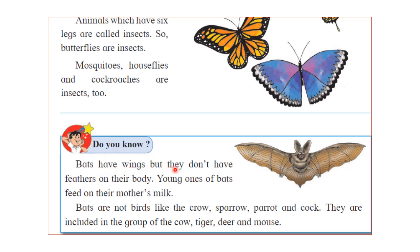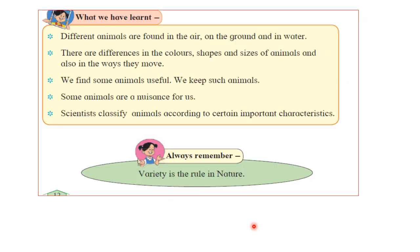Do you know bats have wings but no feathers on their body? The young ones of bats feed on their mother's milk. So bats are not birds like crow, sparrow, parrot and cock — they are included in the group of mammals like cow, tiger, deer and mouse, because they feed their young ones on mother's milk and give birth to young ones like themselves. In summary: different animals are found in the air, on the ground and in water. There are differences in color, shape, size and ways of moving. Scientists classify animals according to certain important characteristics. Each animal is different, and variety in nature is the rule.